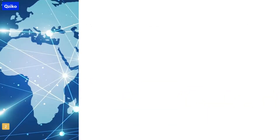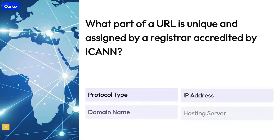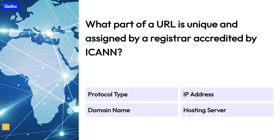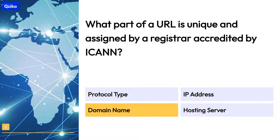Quiz number two: what part of a URL is unique and assigned by a registrar accredited by ICANN? The right answer is domain name.